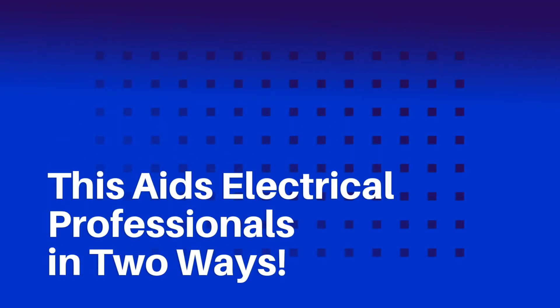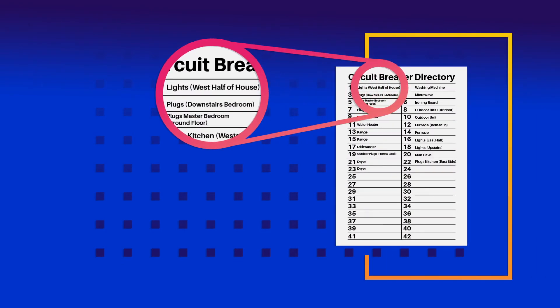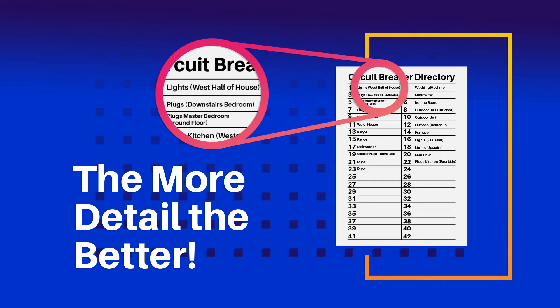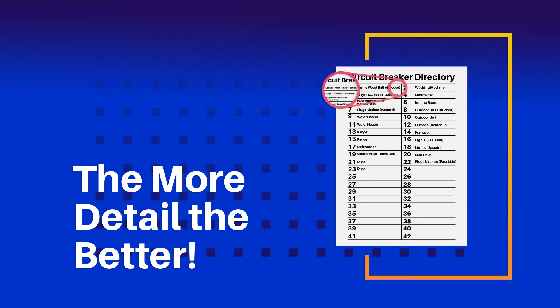This aids electrical professionals in two ways. The first is, when it comes to our jobs, there's no such thing as TMI. The more information provided inside a panel board, the better. The more detail you can provide in a circuit directory, the safer everyone who works on the system will be. It also makes future work on the system easier and provides the best product to the customers.